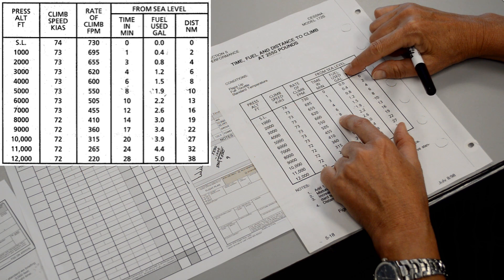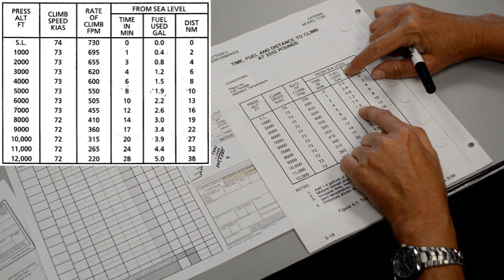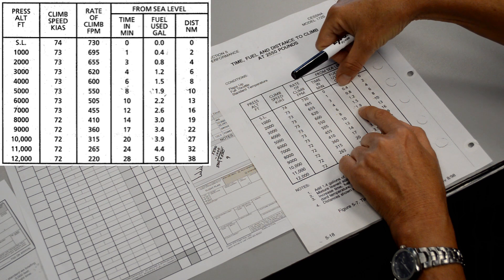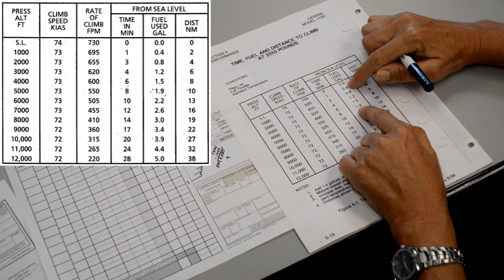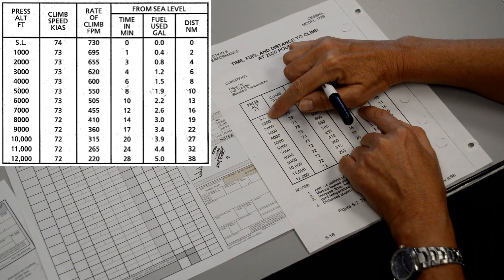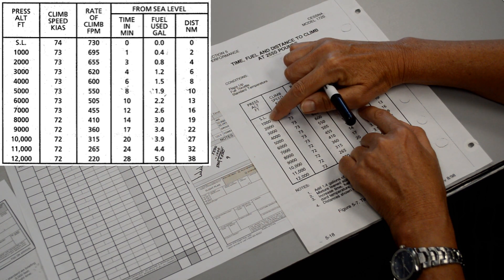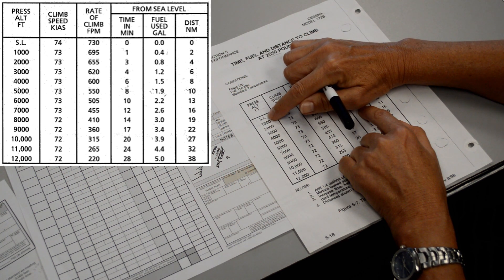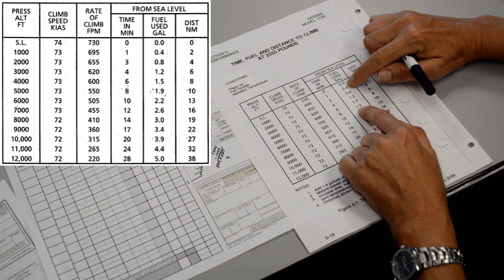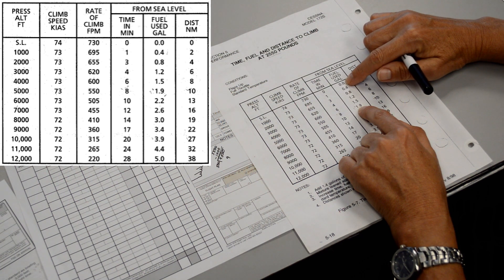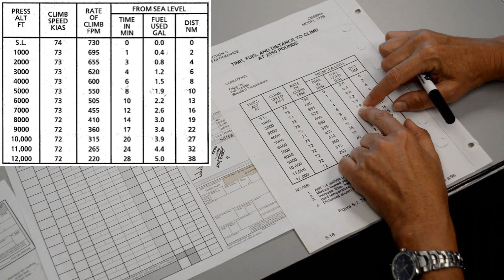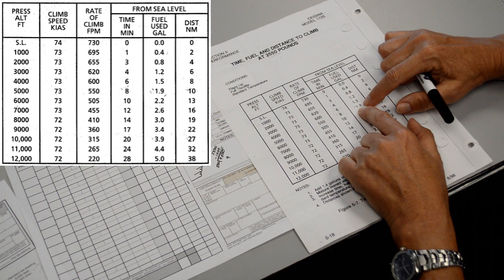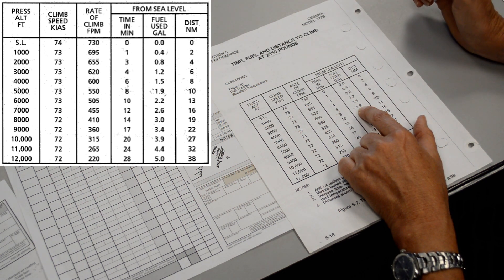It says that the fuel used would be the 1.9 minus 0.2. Where am I getting the 0.2 from was because our pressure altitude for departure was actually around 500 feet. So I'm just interpolating between these two. But to be on the safe side, it would be better just to use this number anyways because then you know that you're claiming that you're using more fuel than you actually should because we don't ever want to run out of fuel.